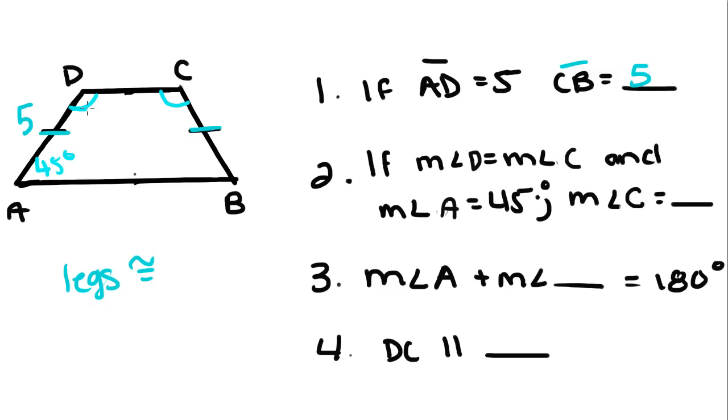So we know these two angles have to be supplementary. So we're going to call this D. So D plus 45 equals 180. So you subtract that 45 over, you get D equals 135.